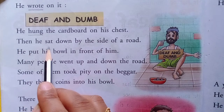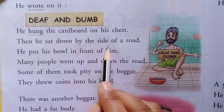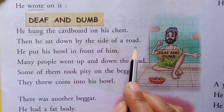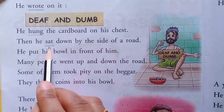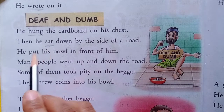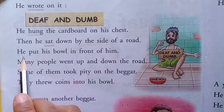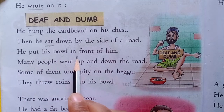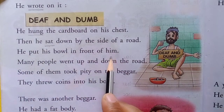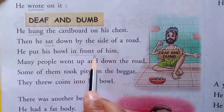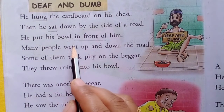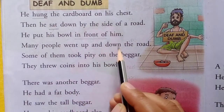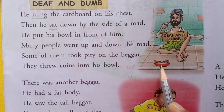Then he sat down by the side of a road. Sat — seat ka arth hota hai baithna; sat matlab baitha tha. He put his bowl in front of him. In front of matlab saamne.